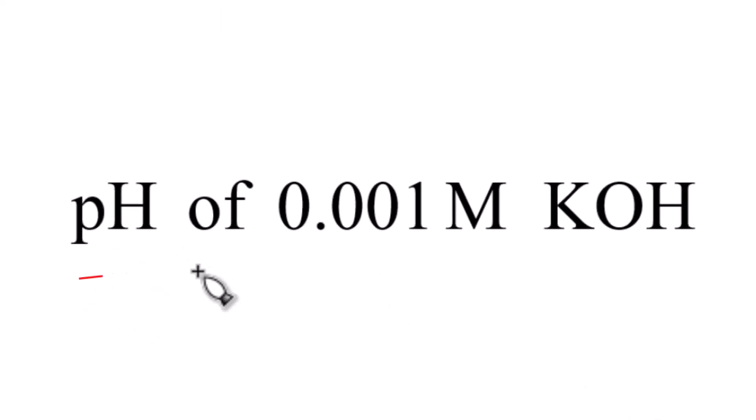In this video, we're going to figure out the pH of a 0.001 molar solution of KOH. That's potassium hydroxide here.